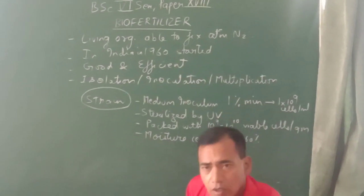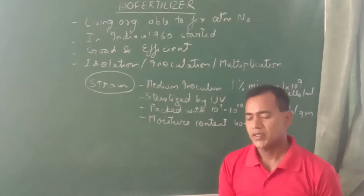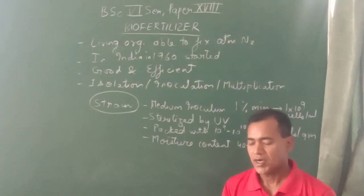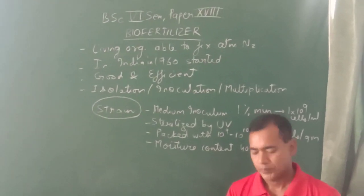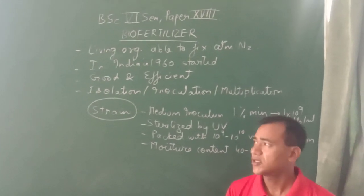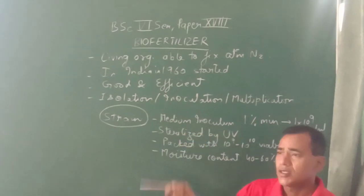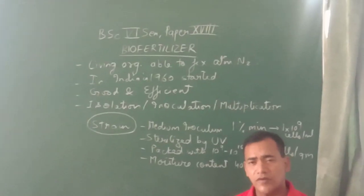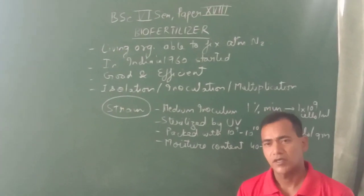First of all, this was used by Norway and Hibner who used nitrogen in 1895. In India, this was started in the 1960s. It is one of the very good and efficient methods to fix atmospheric nitrogen.